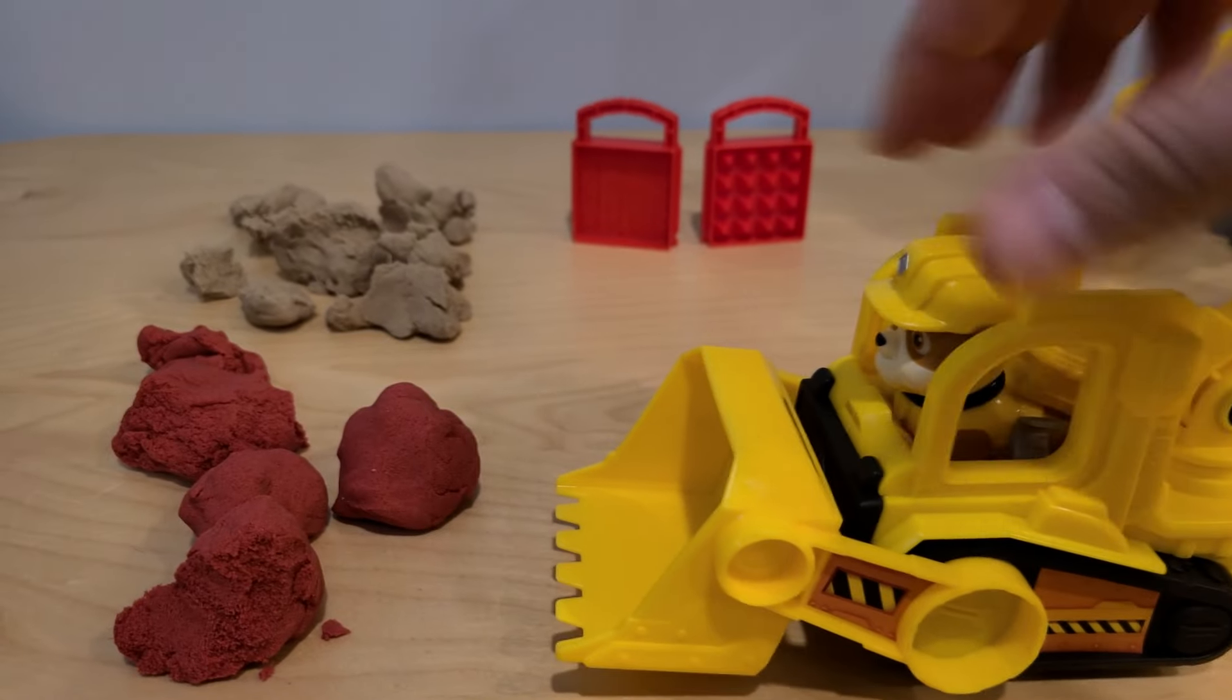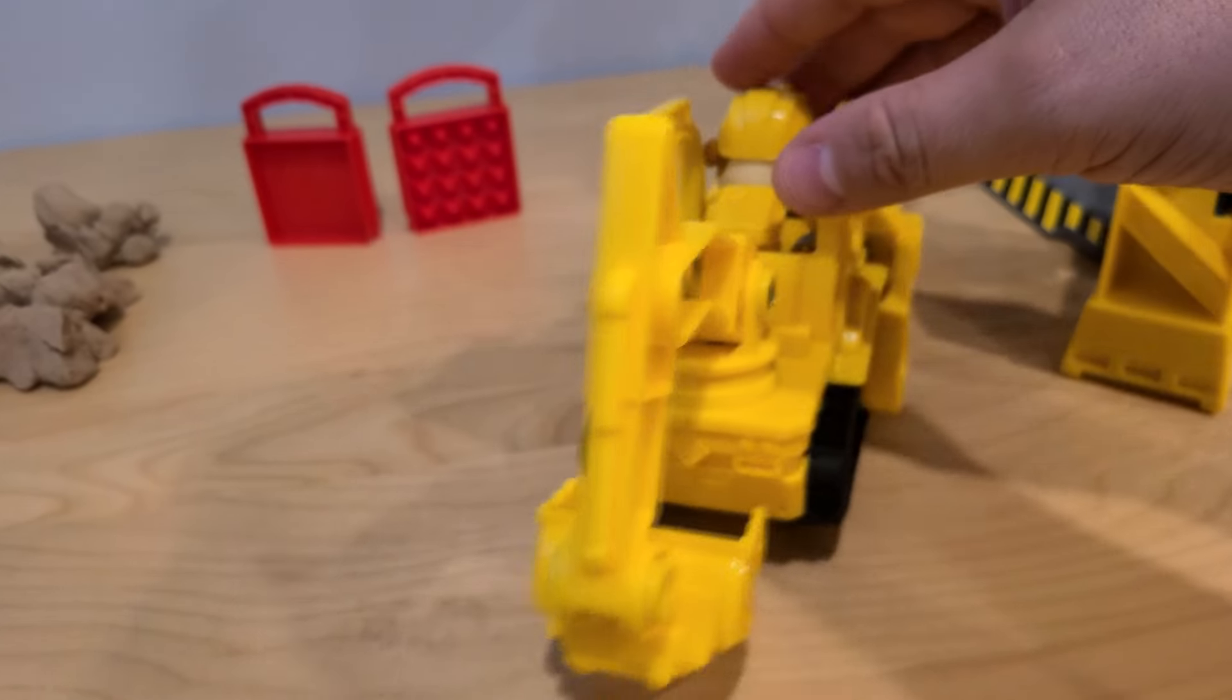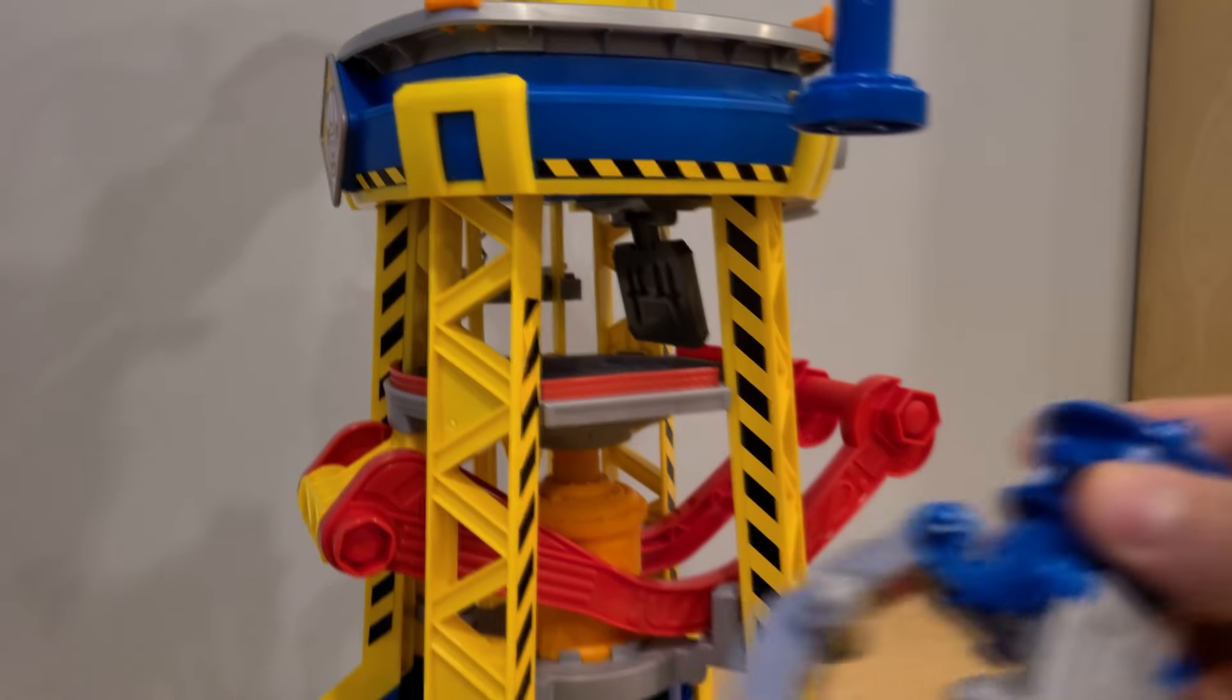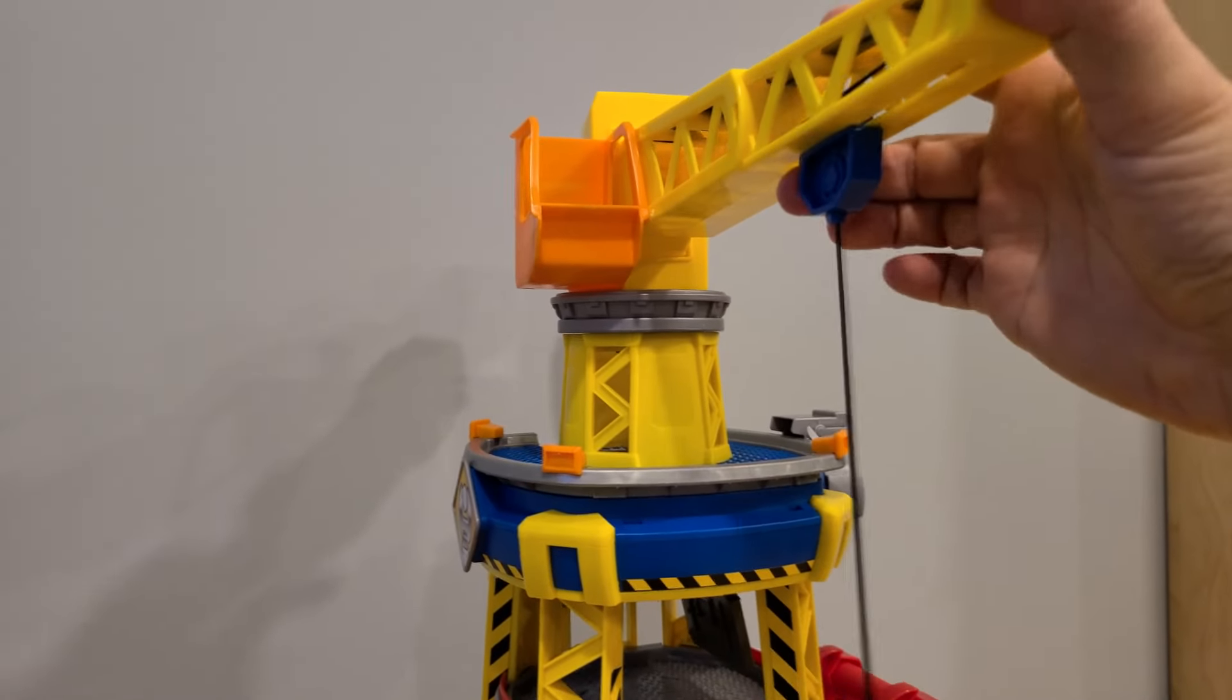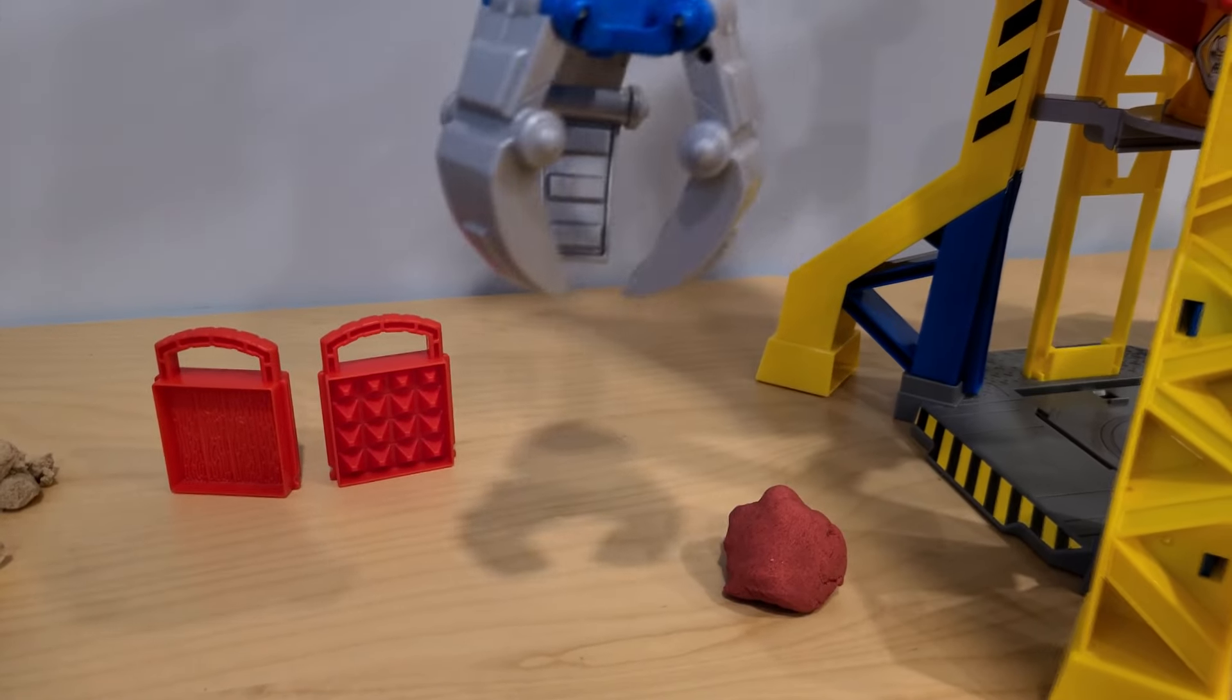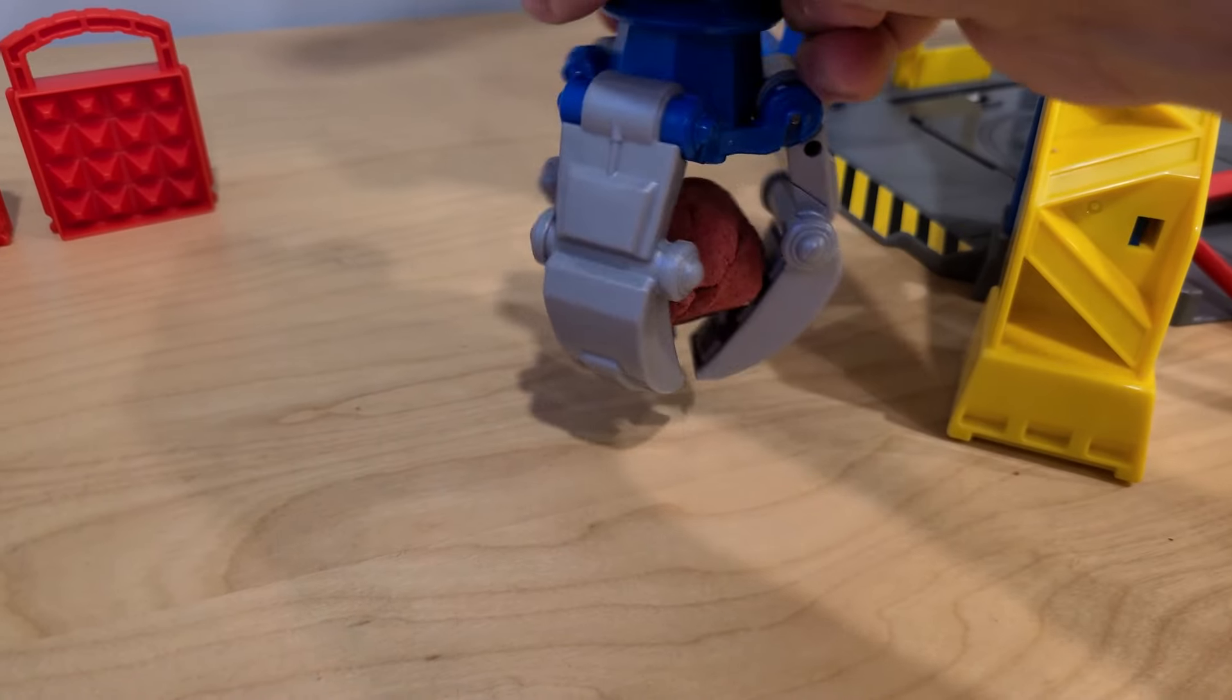So first, let's pick up some kinetic sand. After all, we do have a bulldozer. There is some. And now let's bring it to this side right here. Let's dump it. And our crane will do the rest. So let's see. We need to pick this up. So let's use this attachment right here. Let's put this in here. Let's lower. And now we can twist it and pick up this piece of sand. Let's see. Can we do it? There we go. Let's open the arm.